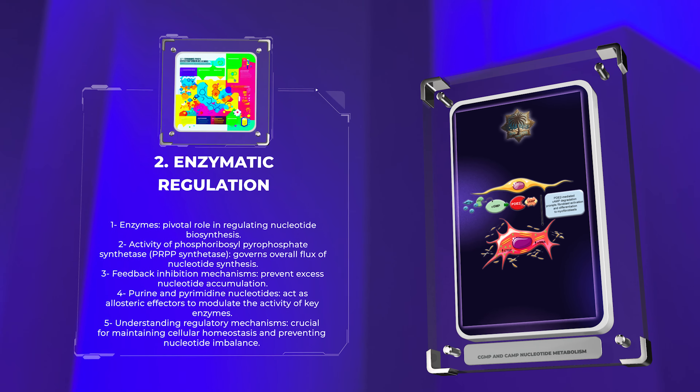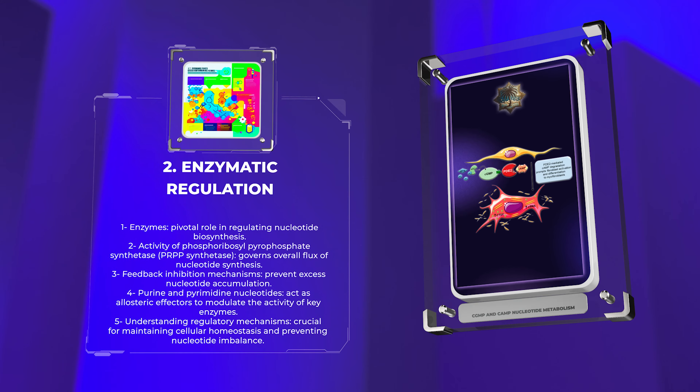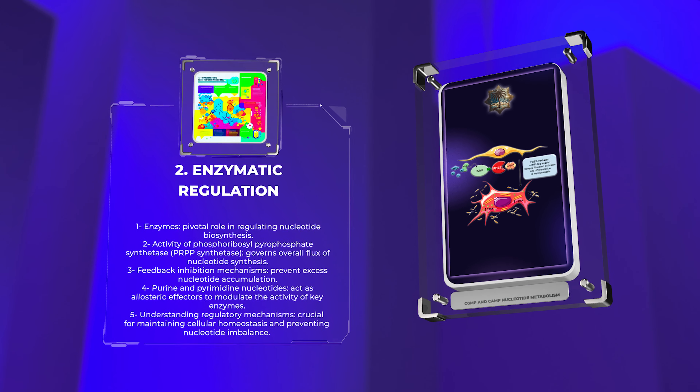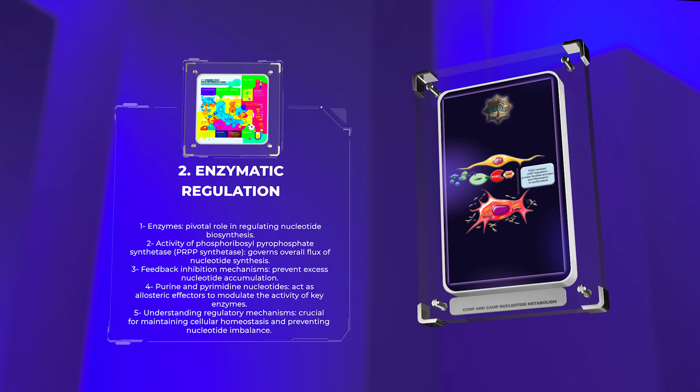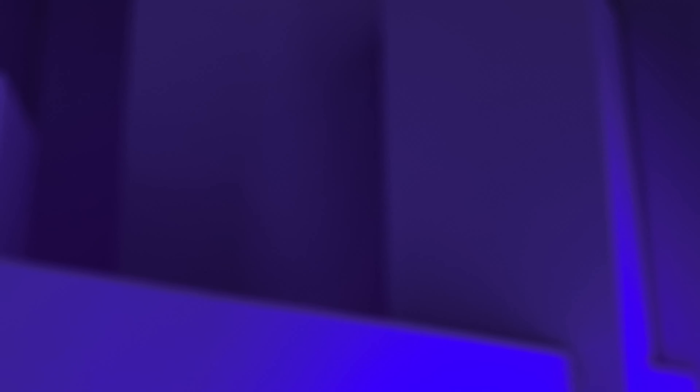Enzymes play a pivotal role in regulating nucleotide biosynthesis at various stages. For instance, the activity of the rate-limiting enzyme, phosphoribosylpyrophosphate synthetase (PRPP synthetase), governs the overall flux of nucleotide synthesis. Moreover, feedback inhibition mechanisms ensure that excess nucleotides do not accumulate. The end products of the pathway, purine and pyrimidine nucleotides, act as allosteric effectors to modulate the activity of key enzymes involved in their biosynthesis. Understanding these regulatory mechanisms is crucial for maintaining cellular homeostasis and preventing diseases associated with nucleotide imbalance.